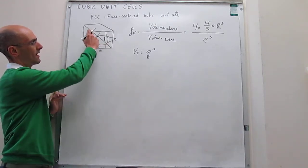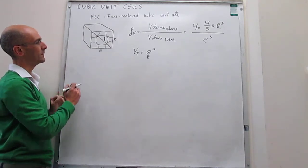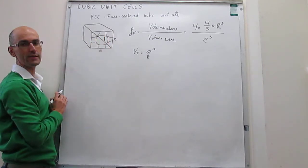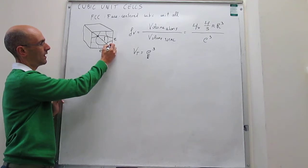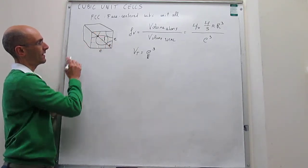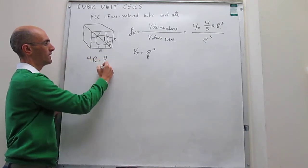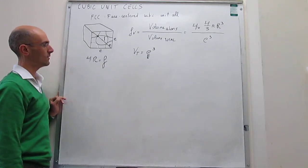And that is something that we're going to be able to do using the face diagonal here. Notice that the diagonal of one of the faces of this cube is going to be equal to 4 times the radius of one of the spheres. Notice that this face diagonal will be one radius of that sphere, and then two radii, and then another radii, so 4 radii of those atoms is going to be equal to this face diagonal.